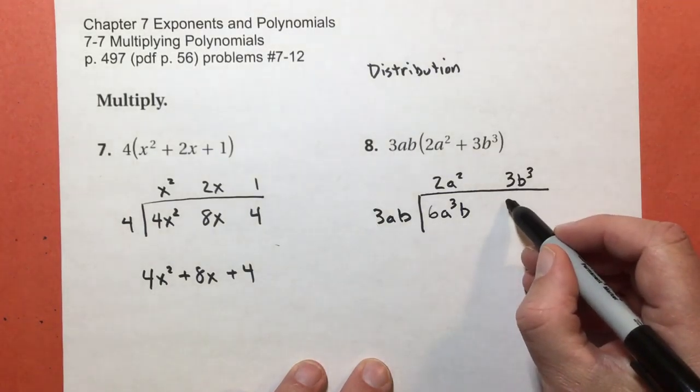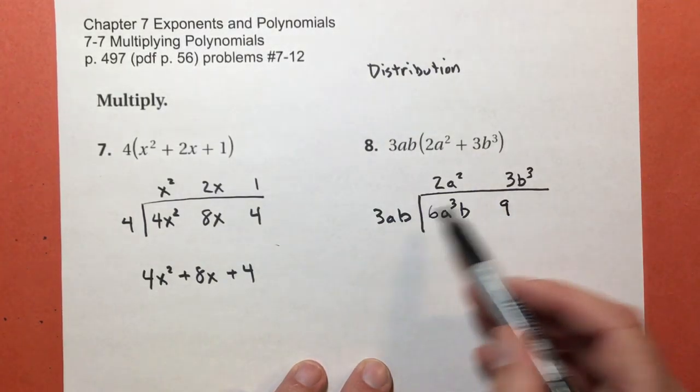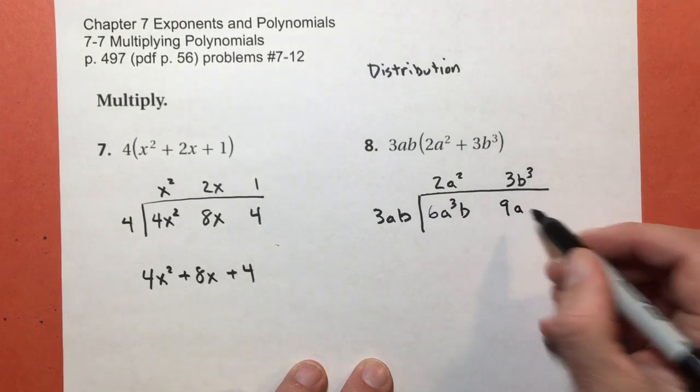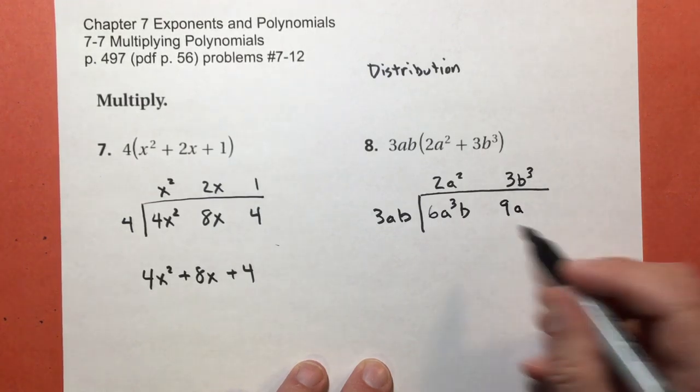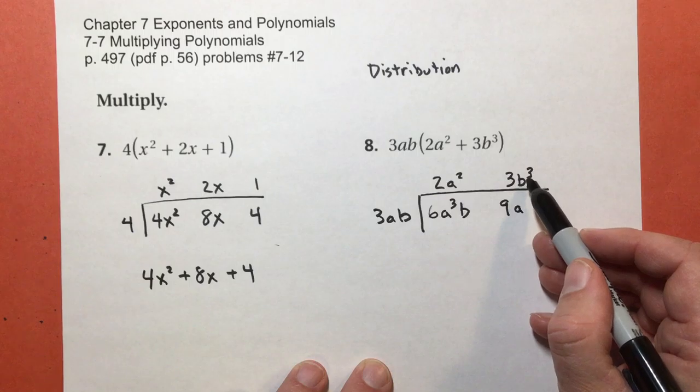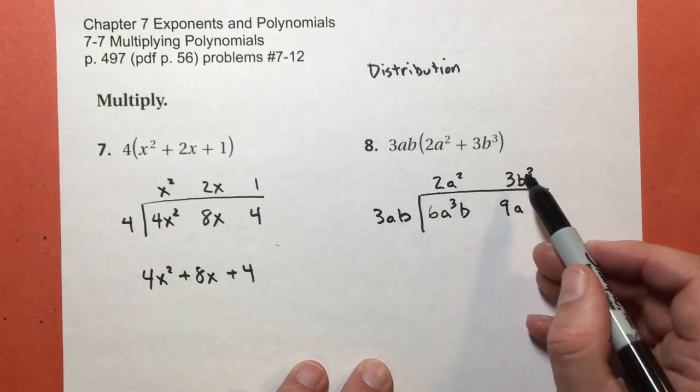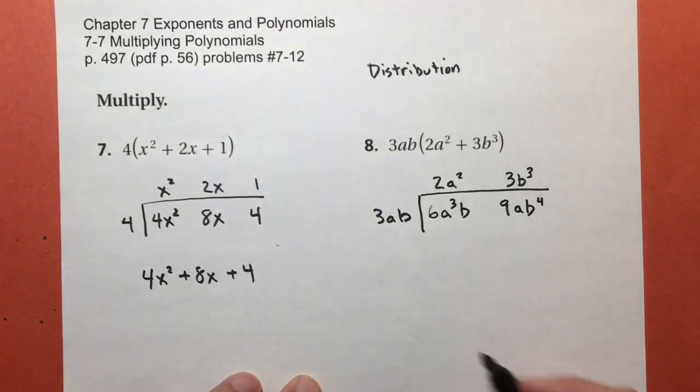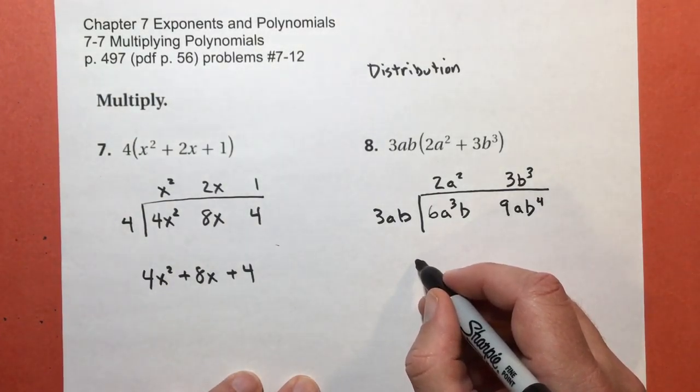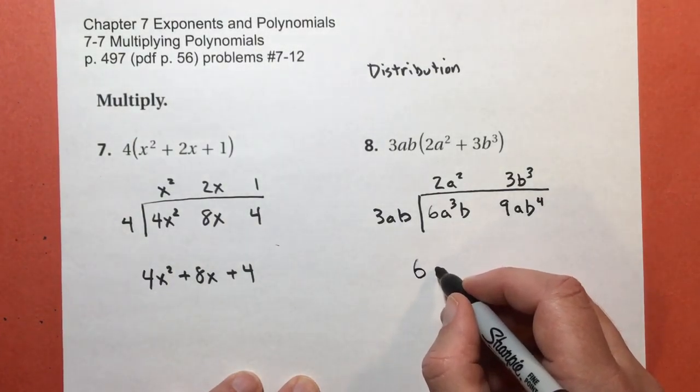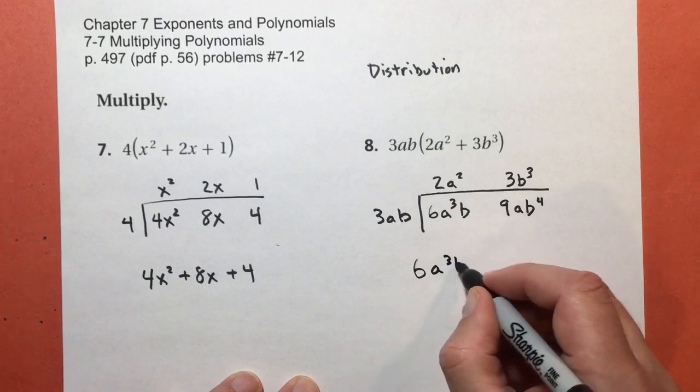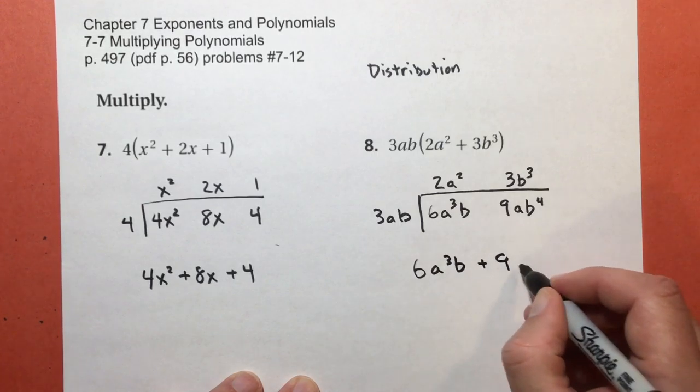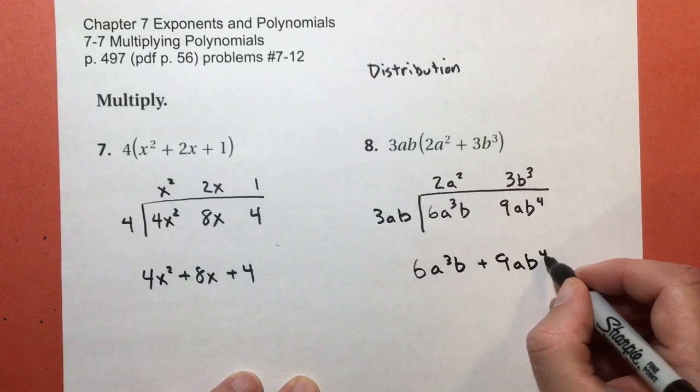3 times 3 is 9. Here's an a. There's no a's up here, so I only get that single a, a to the first power. And b times b to the third power, think of it as 1 plus 3, so that I get b to the fourth power. So my response, my answer, so to speak, is 6a to the third power b plus 9ab to the fourth power.